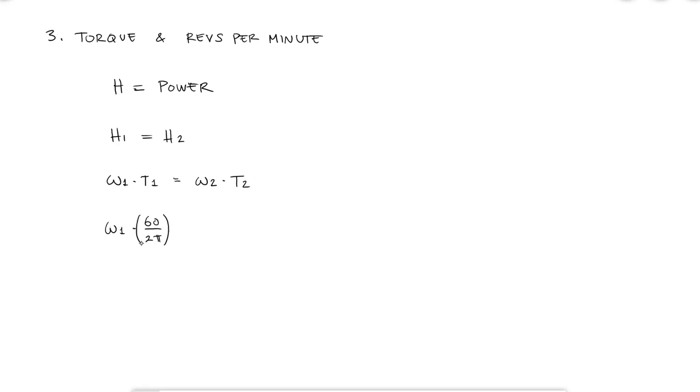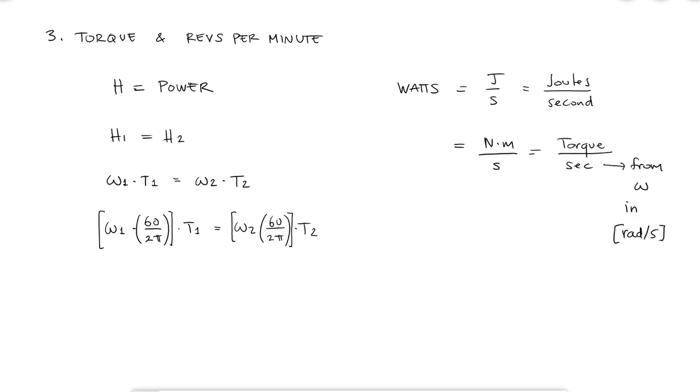Dividing by 2 pi and multiplying by 60 on both sides, and I do include the 60 now, because power in watts would necessitate an angular velocity in radians per second, not minute, we get rpm times torque, which results in a relation between revs per minute and torques.